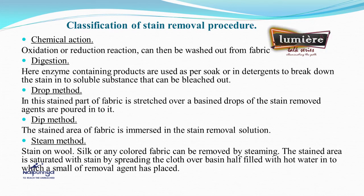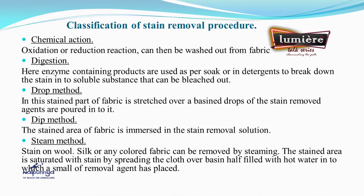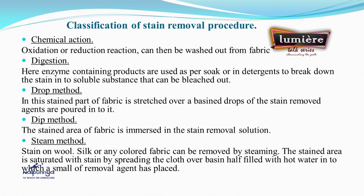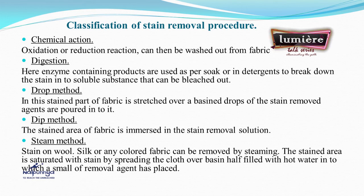The classification of stain removal procedures includes different methods and actions. Chemical action is a process of oxidation or reduction reaction and can be washed out from fabrics. The digestion method uses enzyme-containing products such as biological detergent to break down the stain. The drop method involves stretching the stained part of the fabric over a basin and pouring drops of stain removal agent onto it. The dip method involves immersing the stained area in stain removal solution. The steam method is especially useful for silk, wool, or colored fabrics — the stained area is saturated with steam by spreading the cloth over a basin half-filled with hot water containing a small amount of removal agent.